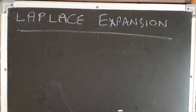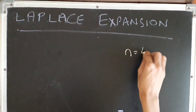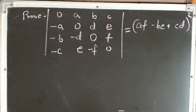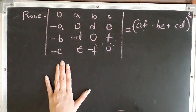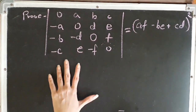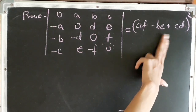In this video we will learn the Laplace expansion of determinants. This method is used for expanding determinants that are of order 4. It is a bit complicated but quite easy to use once you get the hold of it. Suppose we are given a determinant and we have to prove, by expanding it, that it equals the whole square of AF minus BE plus CD.